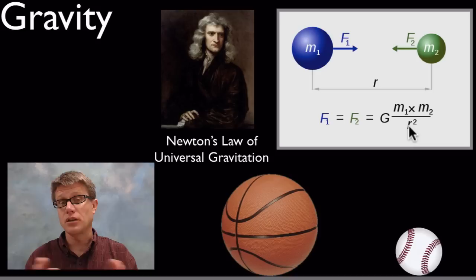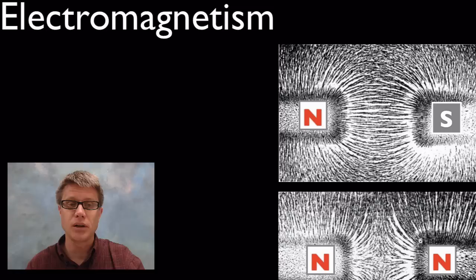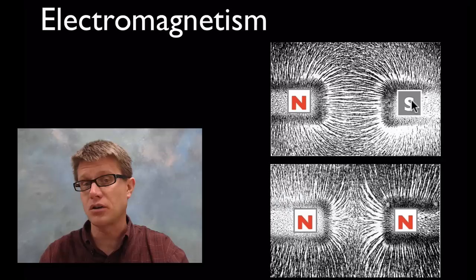A basketball and a baseball are gravitationally attracted to each other, but we couldn't see it — we'd need sophisticated machinery to measure that. But if we have a large enough mass like the earth, we can see it at play.